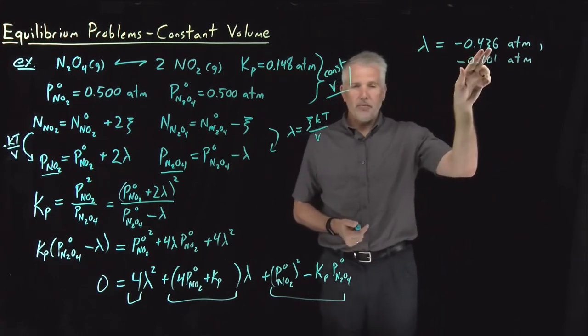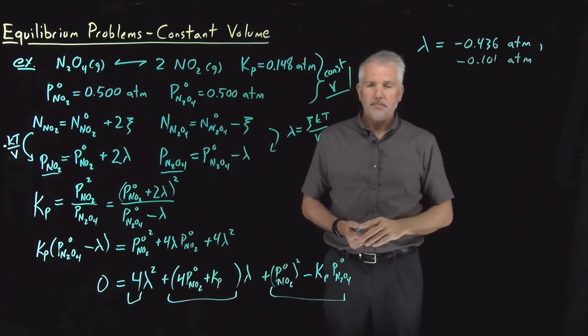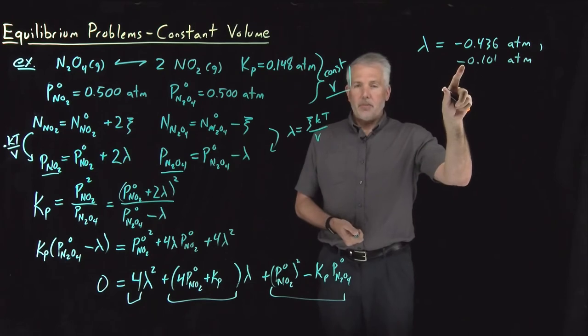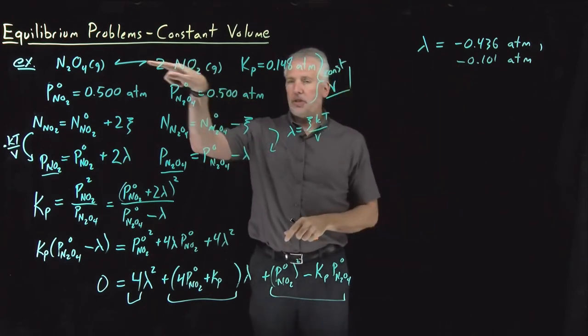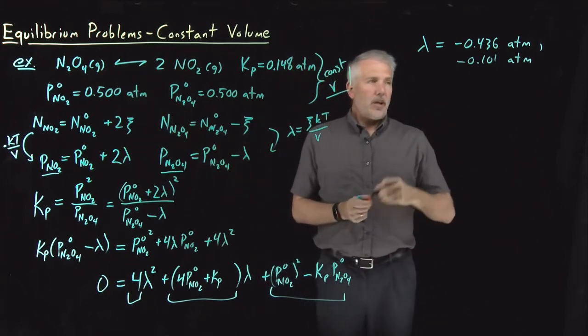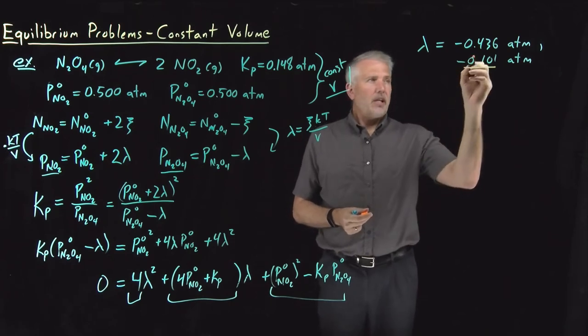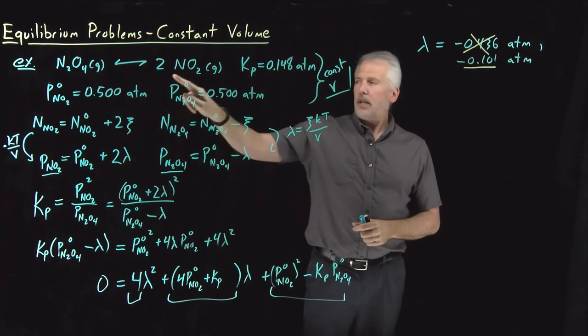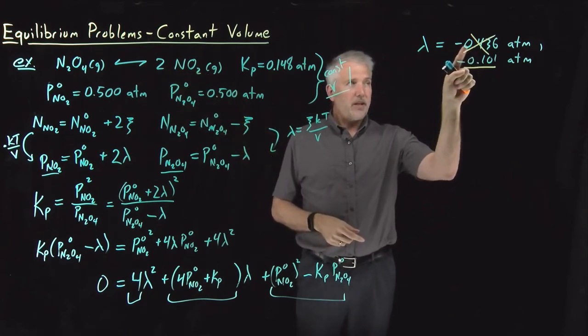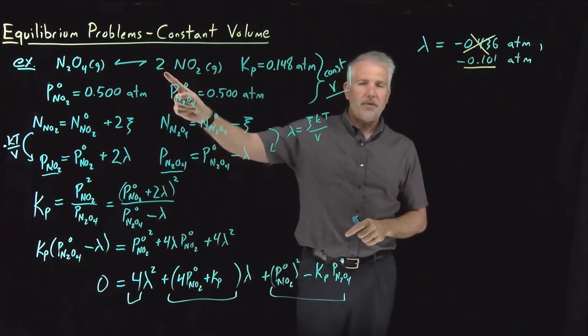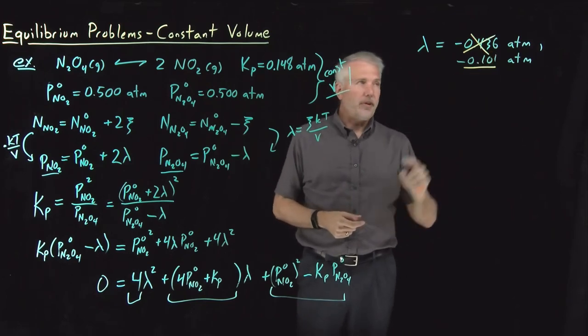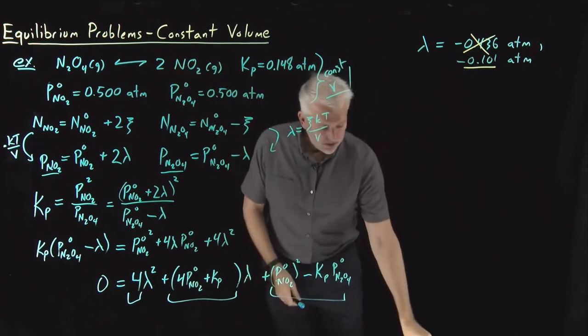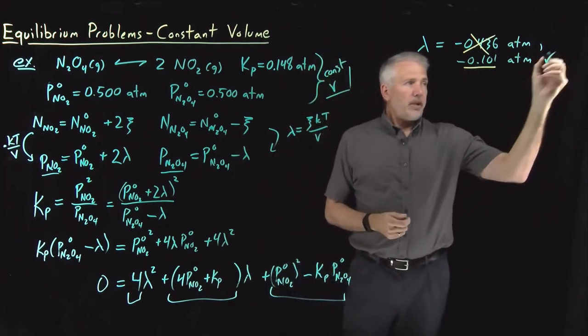One of those solutions is going to be non-physical. They're both negative numbers. Both of these numbers say that the reaction should shift backwards towards reactants. The one that's okay, the one that's allowed, is negative 0.101. That's the one we're interested in. Negative 0.436, that one's not possible because since I started with only half an atmosphere worth of NO2, if the reaction goes backwards, meaning negative 0.436 times, I'm going to lose twice that many atmospheres of NO2. So if I double that number, it's larger than 0.5. So this first option would consume more than all of my NO2 when the reaction goes backwards. So that's the version that's not physically reasonable. So this is the value for lambda that we are going to use.